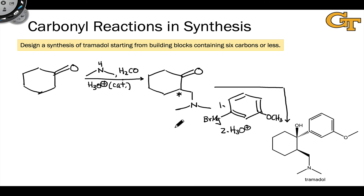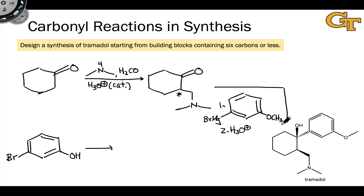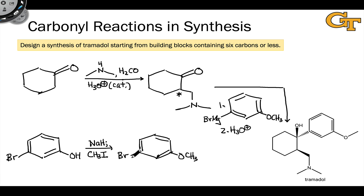Of course, we have to synthesize this Grignard reagent as well. To do that, let's go back to our meta-bromophenol starting material. From this, we first want to form the methyl ether. We can do that by deprotonating completely with something like sodium hydride followed by methyl iodide — this is just the Williamson ether synthesis, an SN2 reaction. To convert the aryl bromide into the corresponding Grignard reagent, all we need to do is treat it with magnesium metal, often done in diethyl ether as solvent.